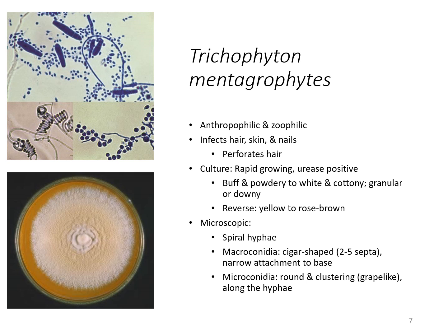The microscopic appearance — you are looking for spiral hyphae. You can see some of these hyphae that look similar to what a grapevine does, how it makes those little coils. The macroconidia, which are the larger ones, are cigar shaped — you can see them as kind of elongated cigar shapes. They have a narrow attachment to the base, just a real slender attachment, and you can see how it kind of narrows at the end.